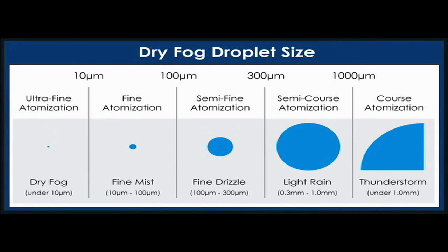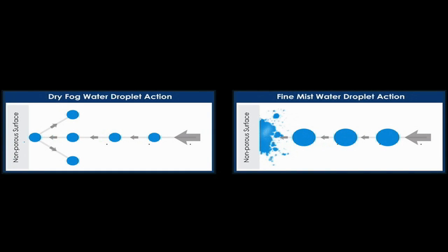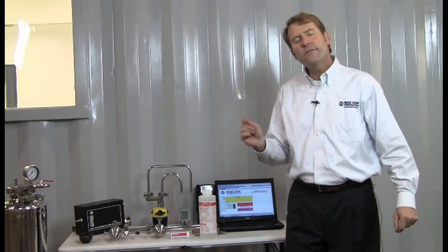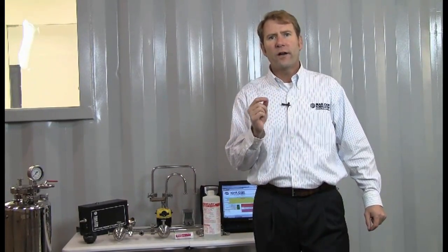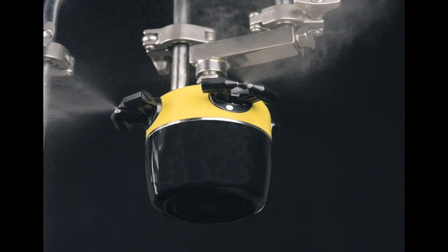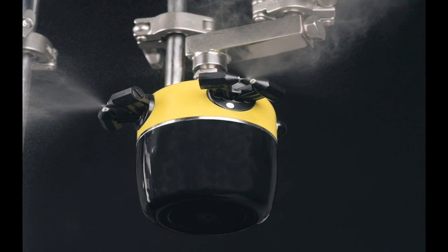The Markor Dry Fog System puts out a 7.5 micron droplet. That droplet is so small it does not wet down surfaces. It bounces off, it evaporates, and it does a vapor phase disinfection, leaving behind no residuals on any surfaces at all. You control the relative humidity in the clean room to ensure that the dry fog has gone everywhere, ensuring a complete and total disinfection.